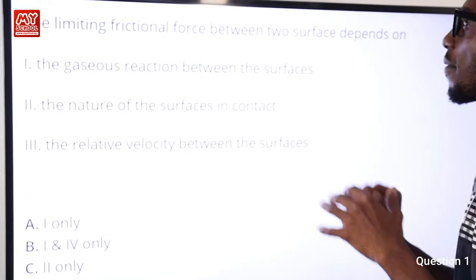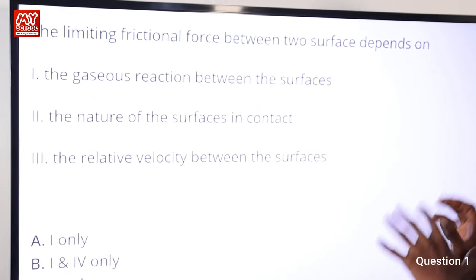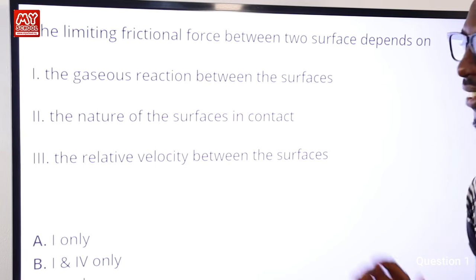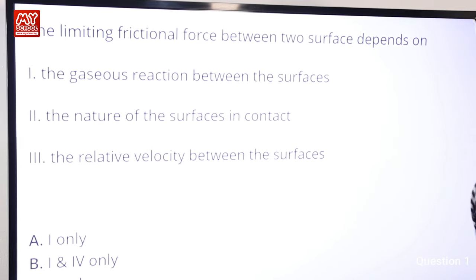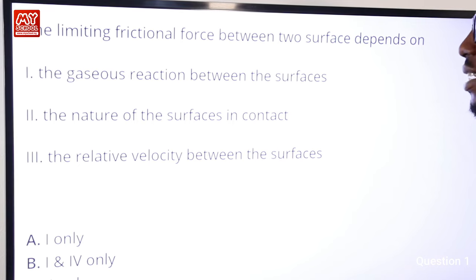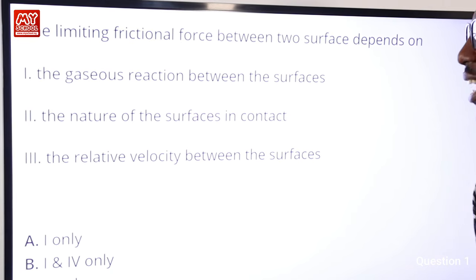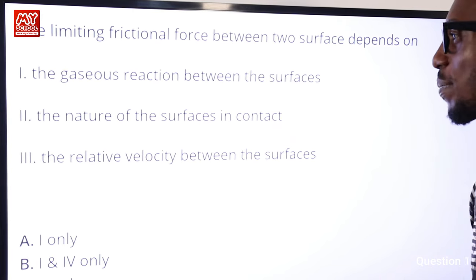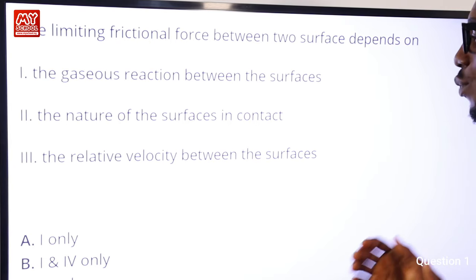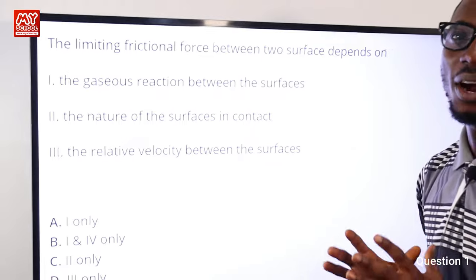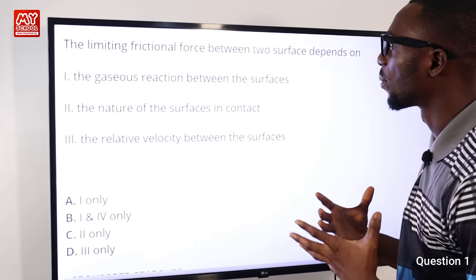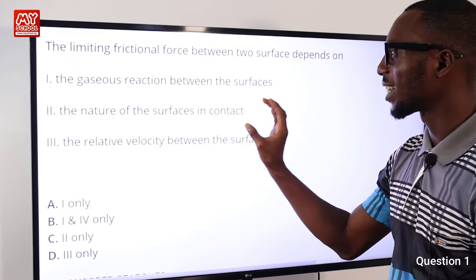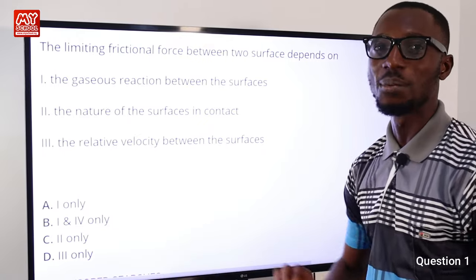The limiting friction between two surfaces depends on what? The first option is the gaseous reaction between the surfaces — no. The second is the nature of the surfaces in contact. We know that the smoother the surface, the lesser the friction experienced; the rougher the surface, the greater the friction. The most accurate answer is the nature of the surfaces in contact, which is option C.